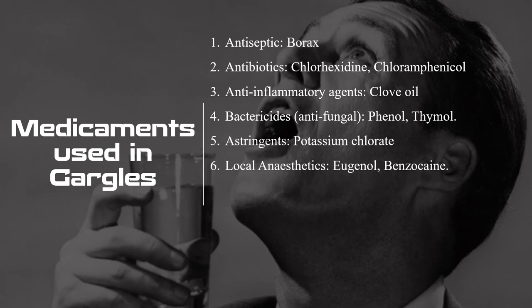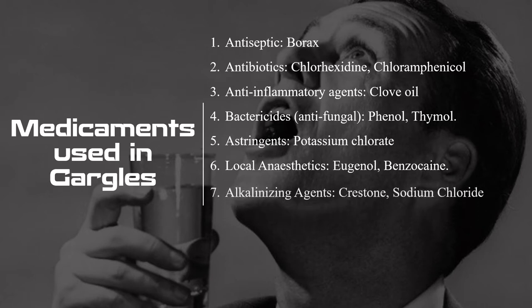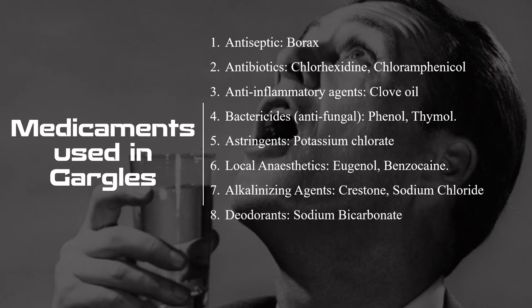Continuing the medicaments: local anesthetics — eugenol and benzocaine. Alkalinizing agents — sodium chloride. Deodorants — sodium bicarbonate as an example. Analgesics — potassium permanganate as an example. These are all the medicaments that can be used in gargle formulations.